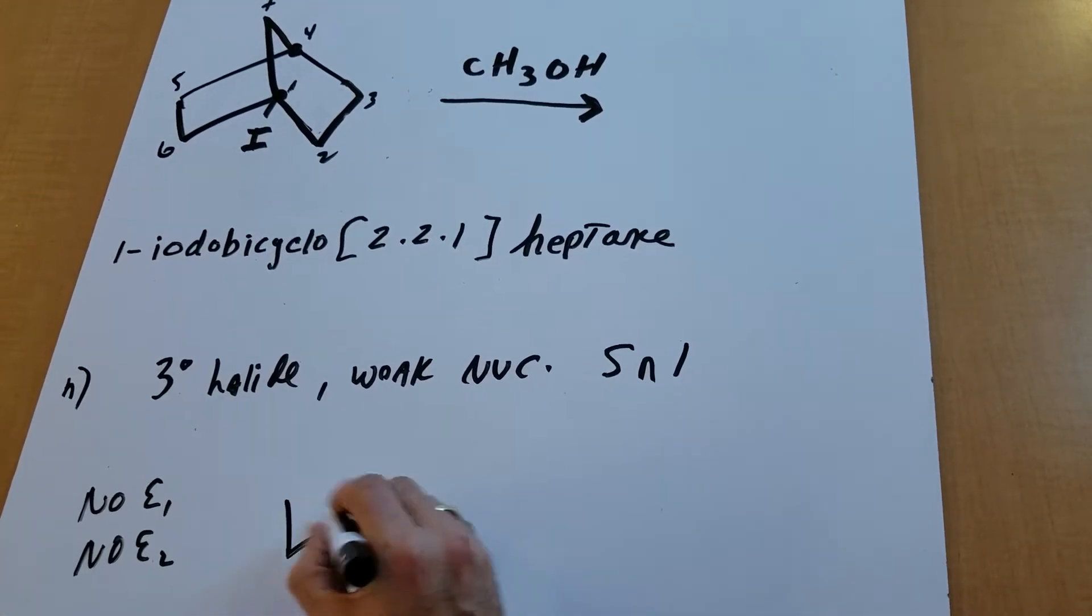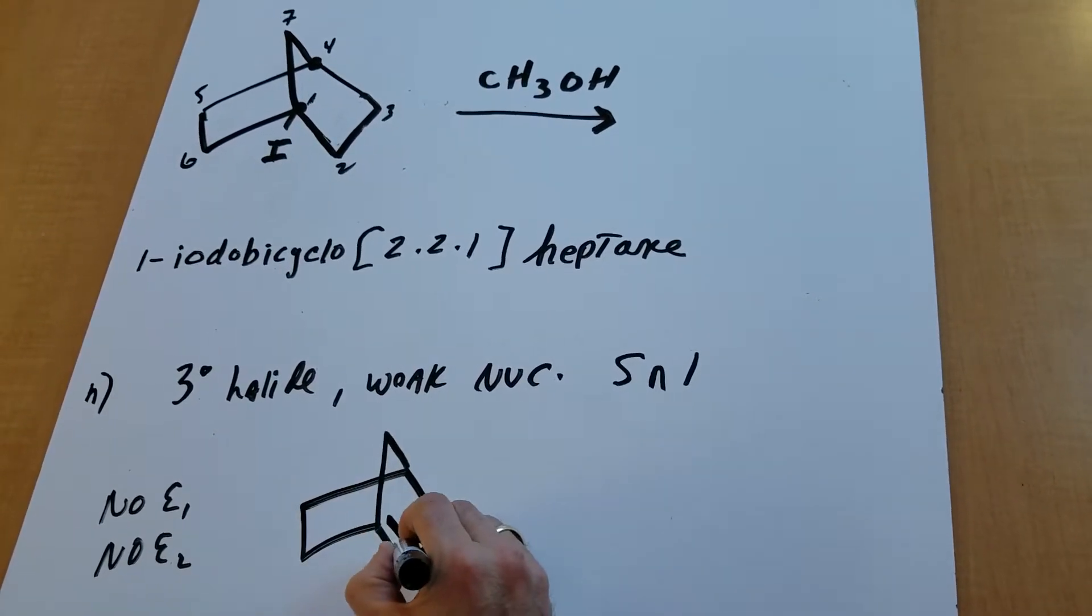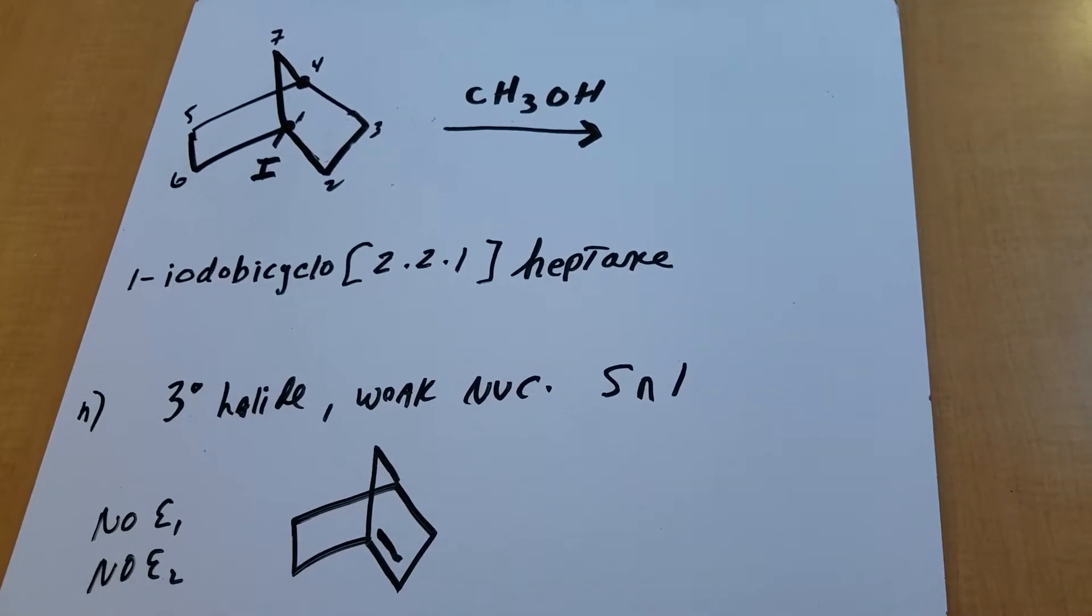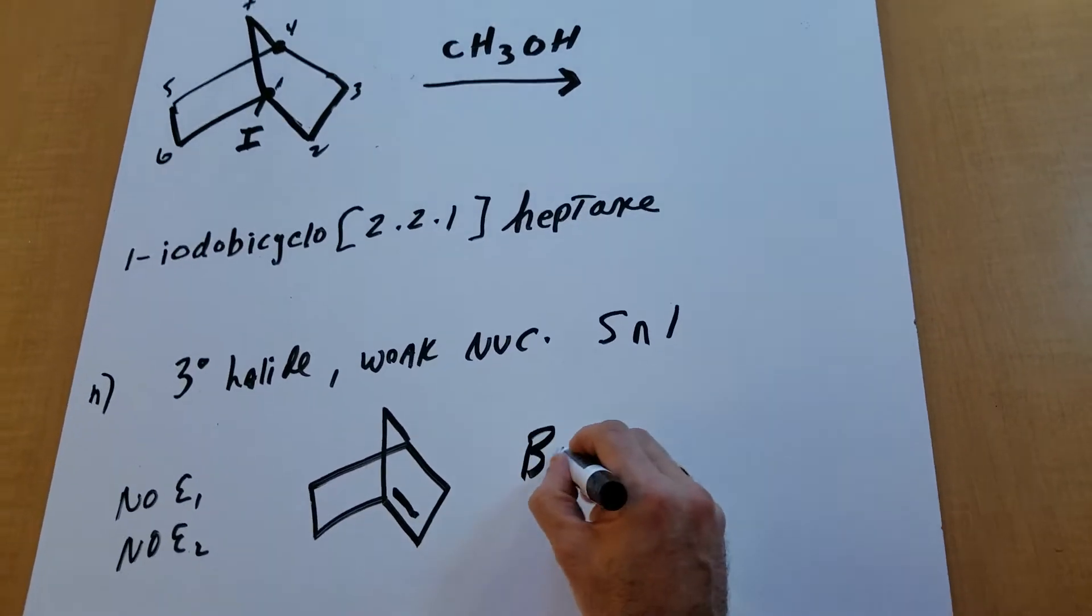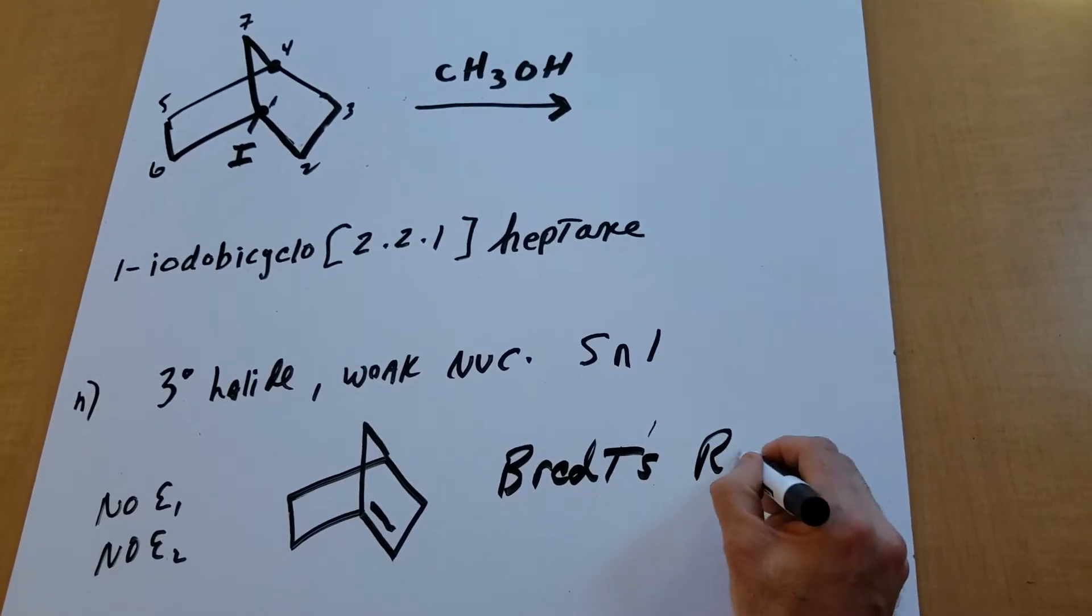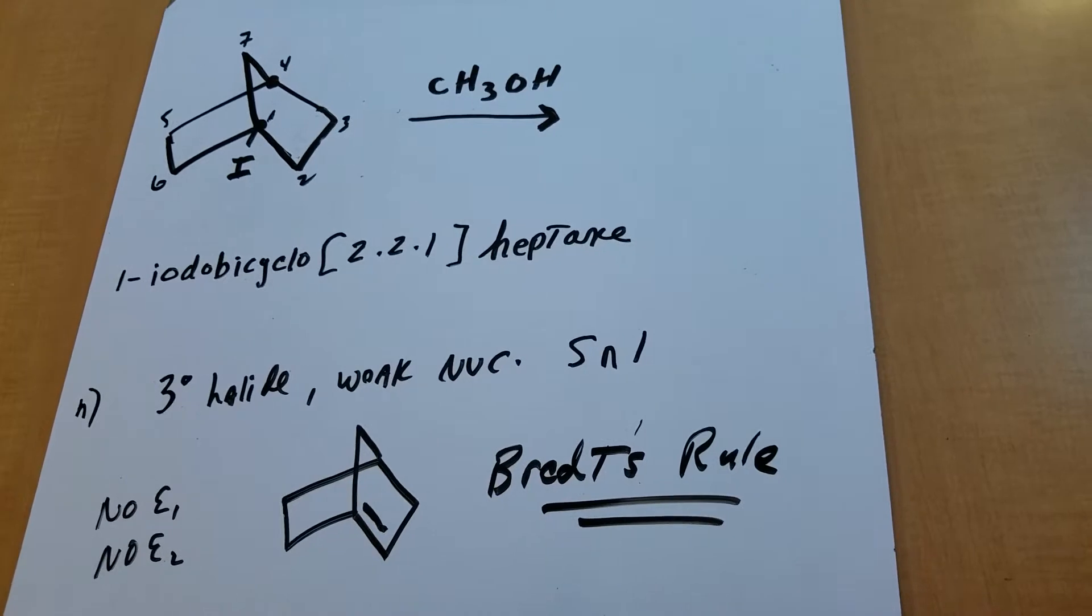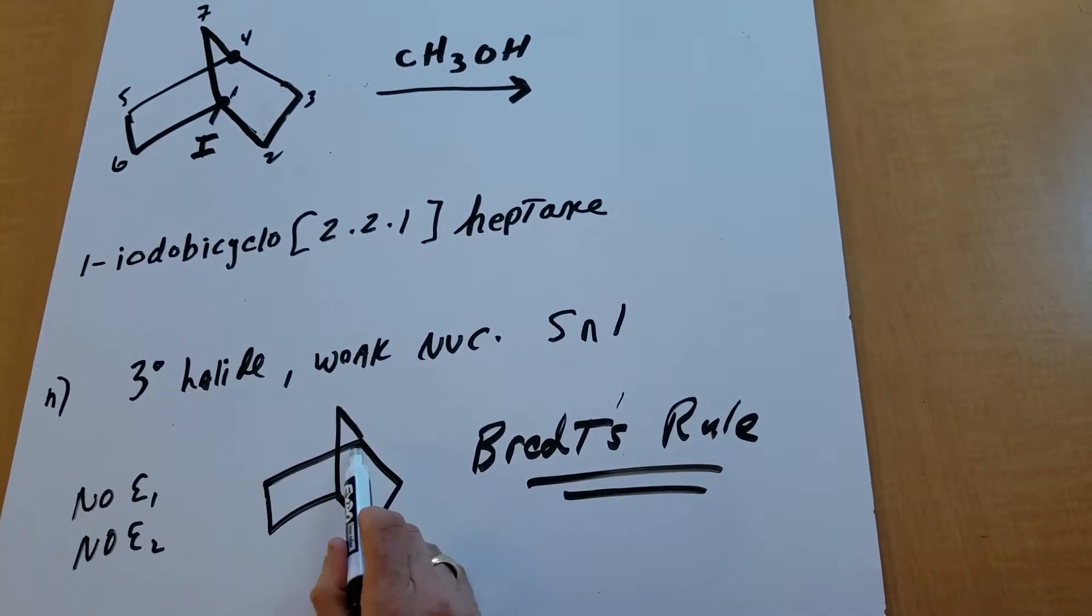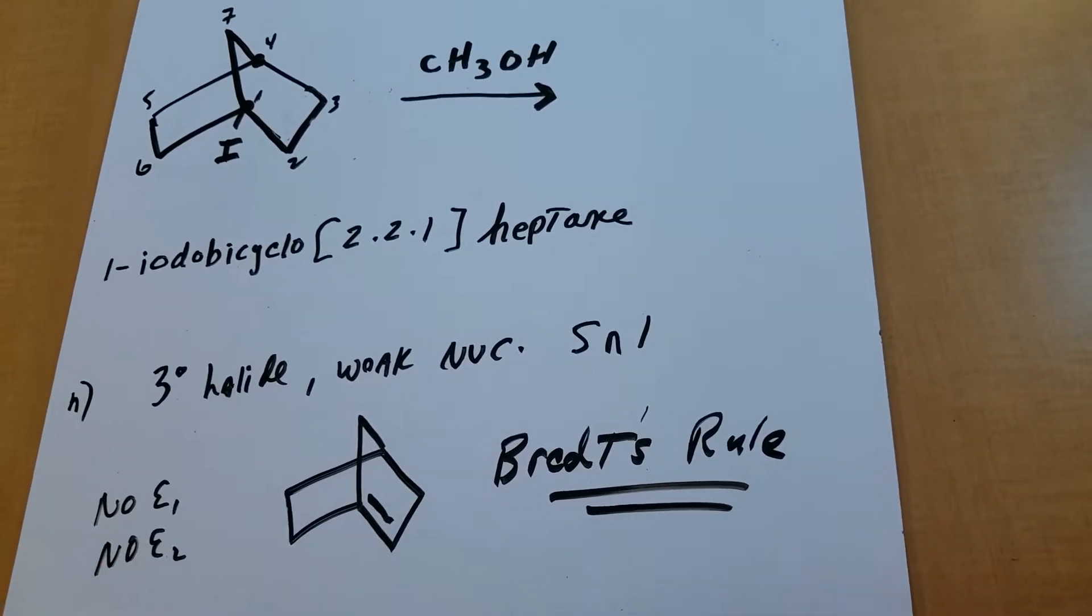First of all, there's no E1 and there's no E2. Why not? If there was an elimination reaction, look what you would produce. You would produce a double bond at a bridgehead carbon. You never place a double bond at a bridgehead carbon in a small ring, unless that ring is over eight carbons, because you violated a rule called Brett's rule. So never place a double bond at a bridgehead carbon, unless this ring is eight carbons or more. So there's no elimination here.